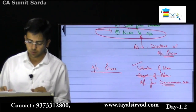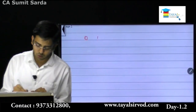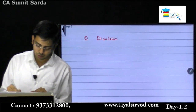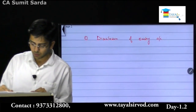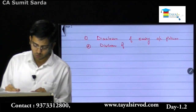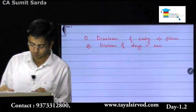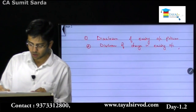This standard is basically required only for the disclosure aspect. There are two things it deals with: disclosure of existing accounting policies, and disclosure of change in existing accounting policies.